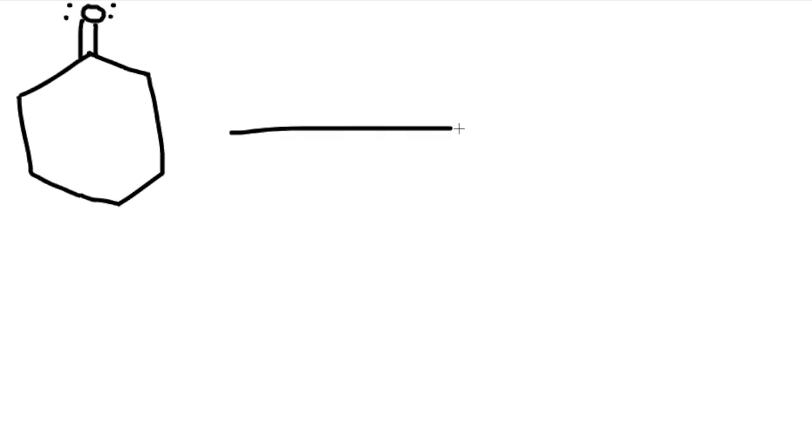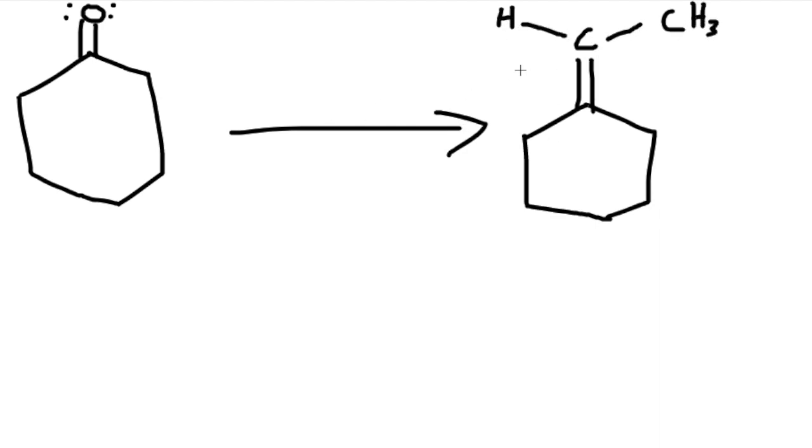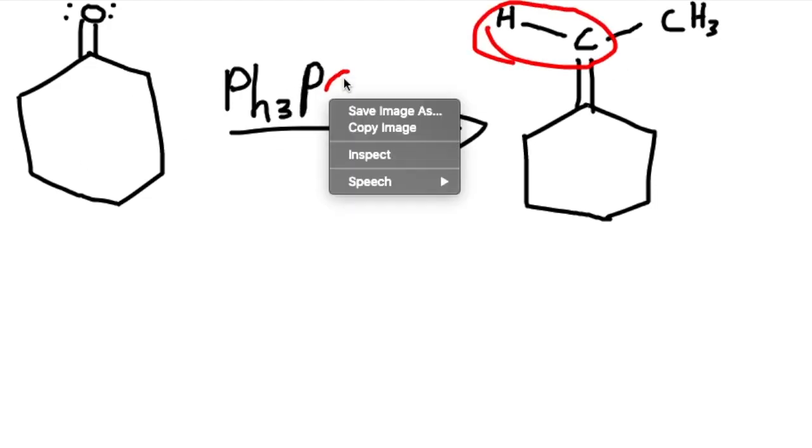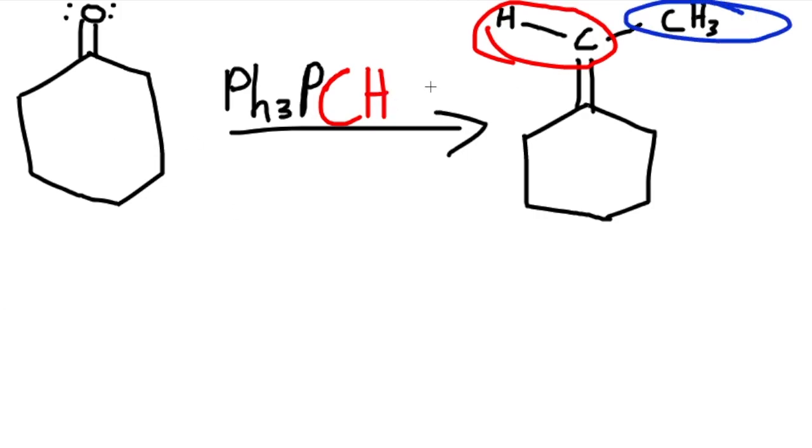Let's start with this ketone. And let's say our product is this. The oxygen is gone. We have a double bond here. Let's put a carbon there and put CH3 and an H. So always put the pH3 and then the P for the phosphorus. So pH3P. Now we have a CH over there. So put CH. And then now we have a CH3. So put a CH3. And this is all you have to do to make this product.